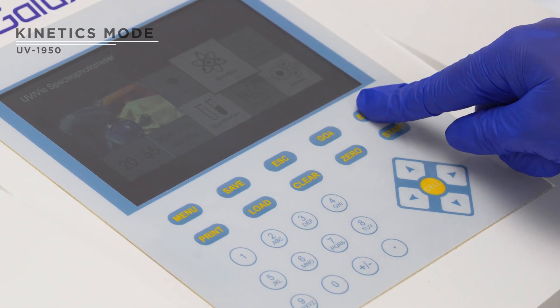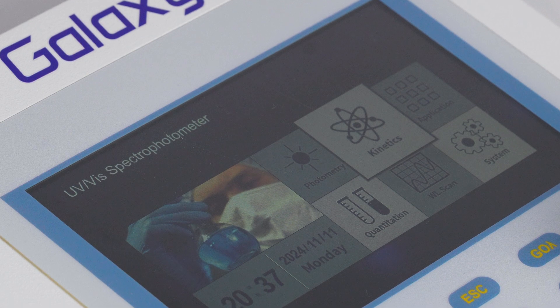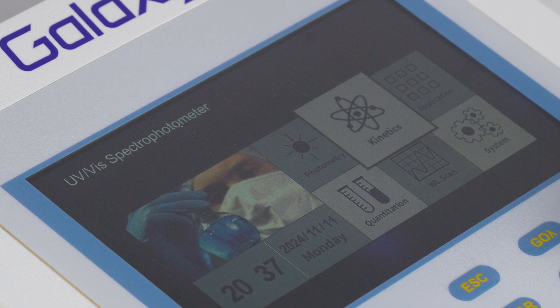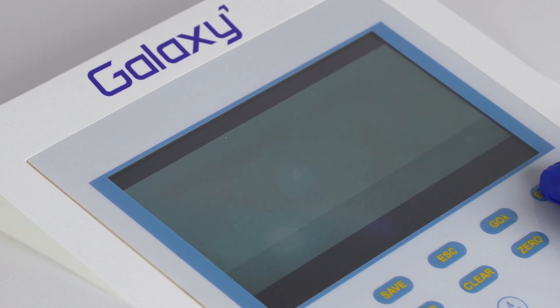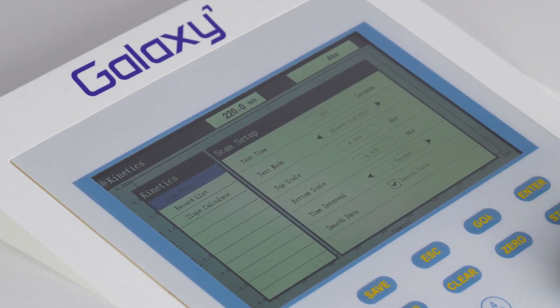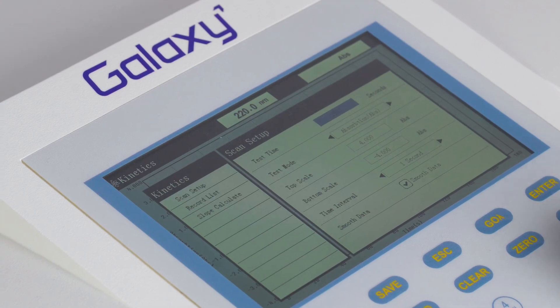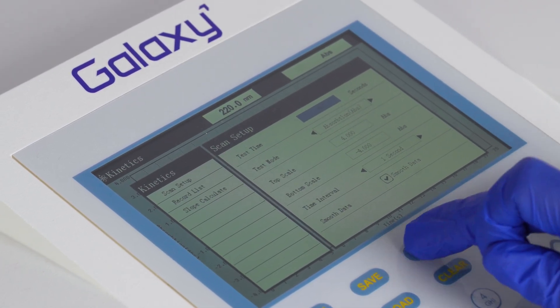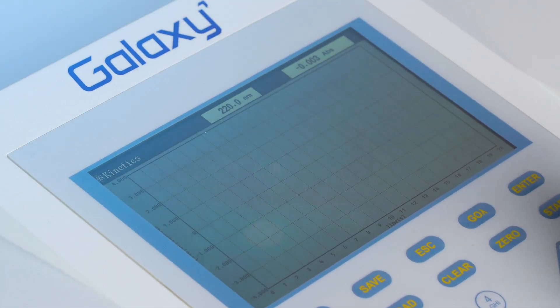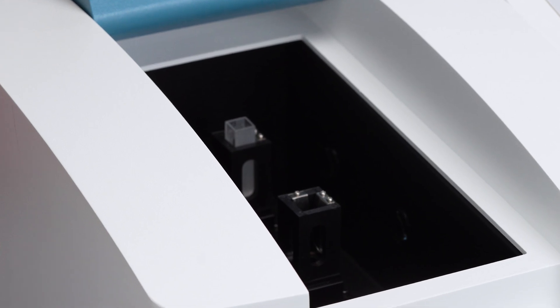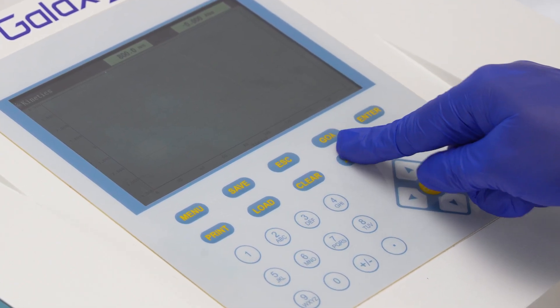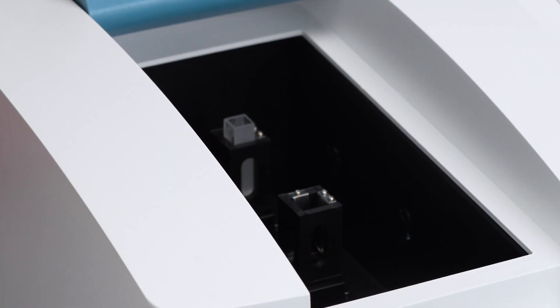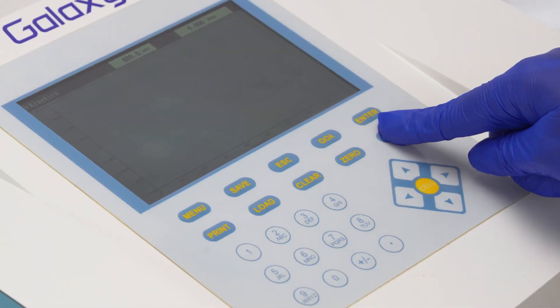In kinetics, the kinetics mode plots a curve of absorbance versus time. Select kinetics from the menu. Input the parameters in the dialog box and press escape to save. Place blanks in both holders and press zero for blanking. Insert the sample and press start to record the reading.